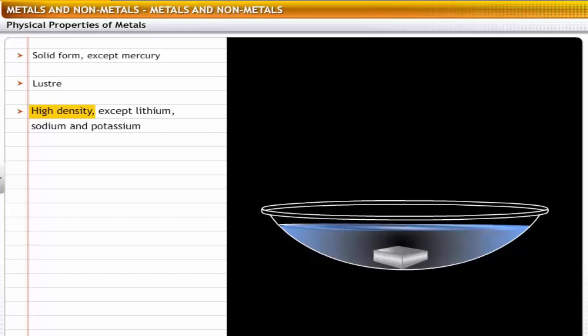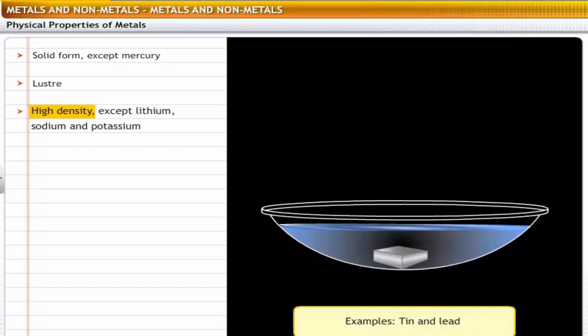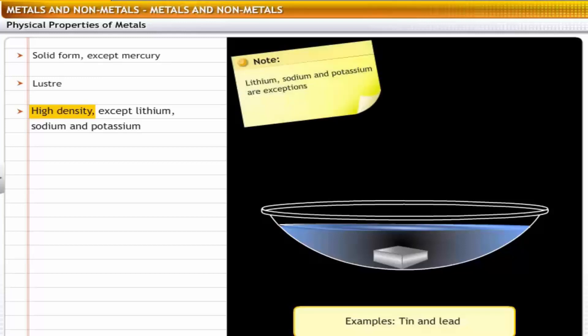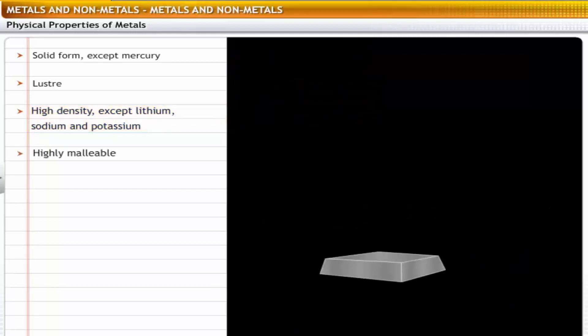Metals have high densities and therefore tend to sink in water. For example, tin and lead sink in water. Exceptions to this rule are lithium, sodium and potassium, whose density is lower than that of water and hence they do not sink.